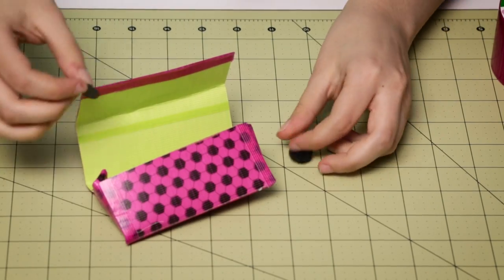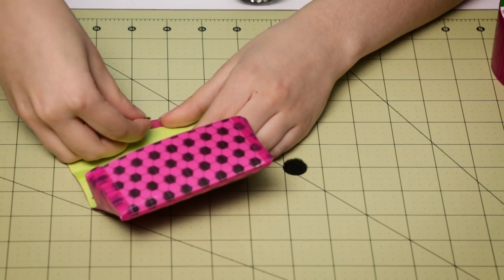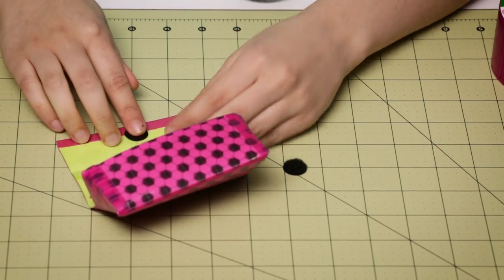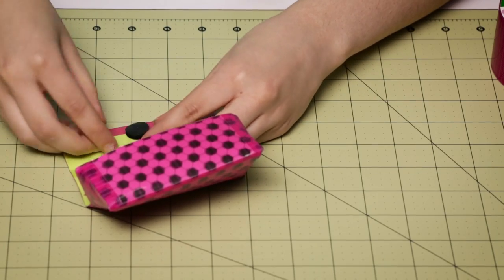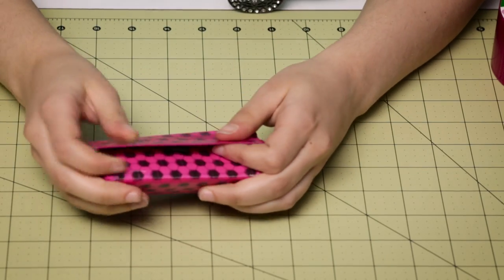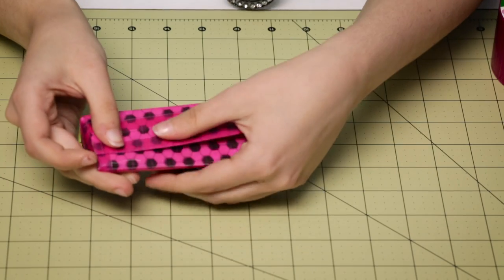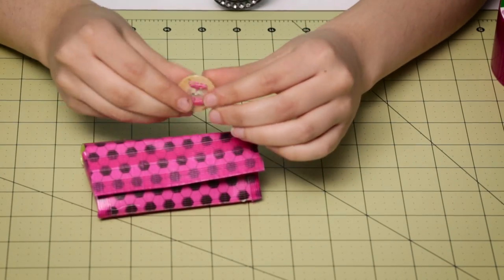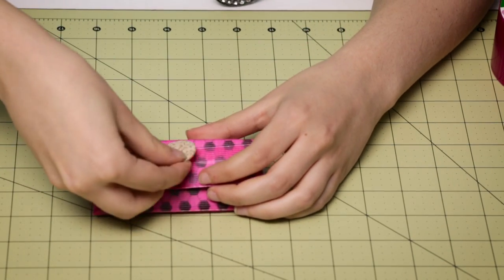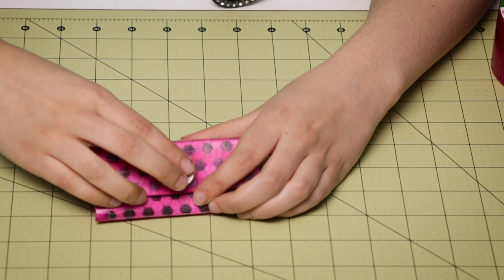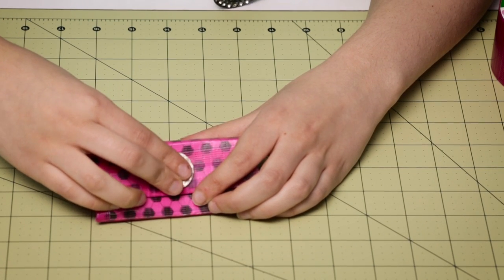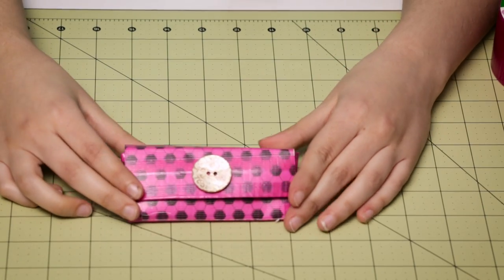Now we're going to take our hook and loop fastener. And I'm just going to place this at the top, right in the middle, and just fold the flap over the box. And then to add a little decorative touch, I just put a little bit of duct tape on the back of this. And I'm just going to stick it down. You can also use a button that already has adhesive on the back. And there we go.